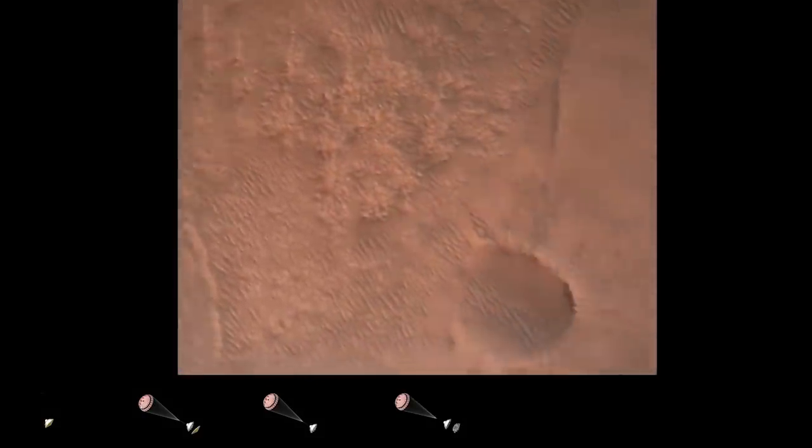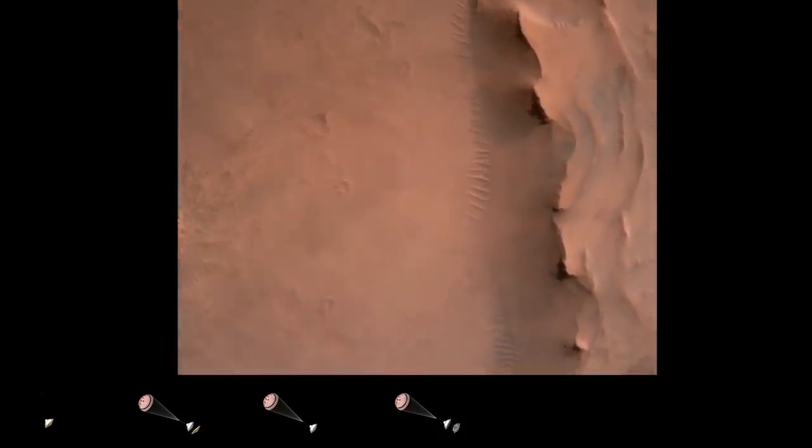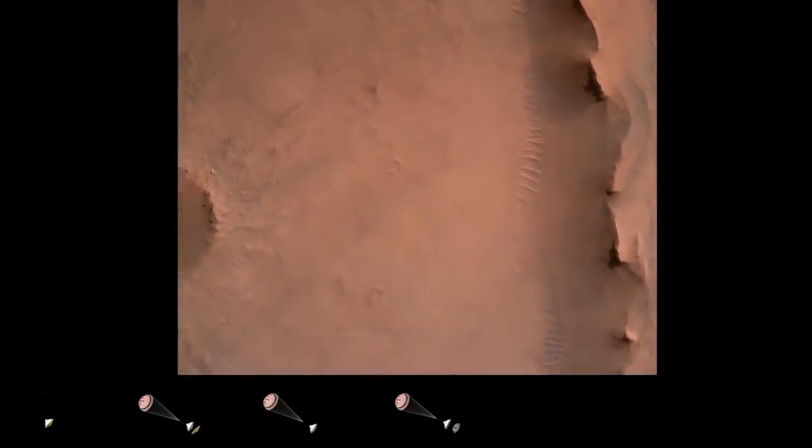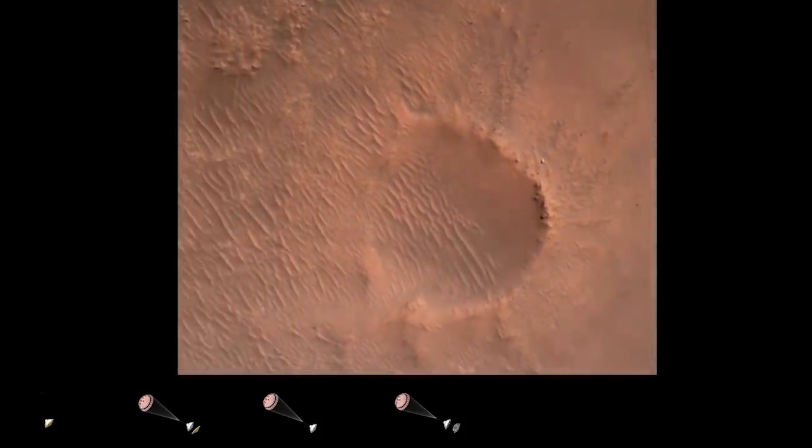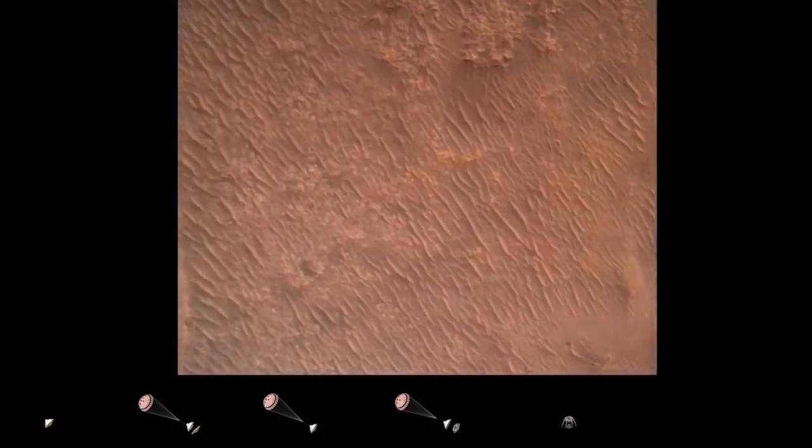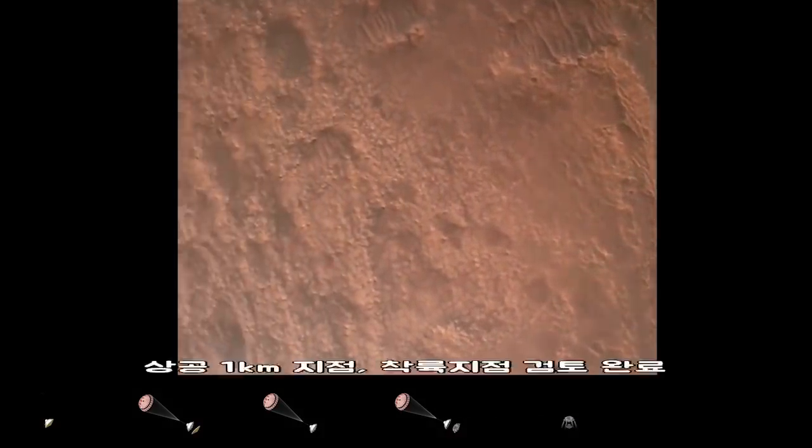Back shell separated. Current velocity is 83 meters per second at about 2.6 kilometers from the surface of Mars. We have confirmation that the back shell has separated. We are currently performing the divert maneuver. Current velocity is about 75 meters per second at an altitude of about a kilometer off the surface of Mars.